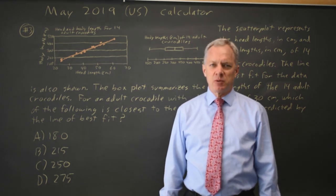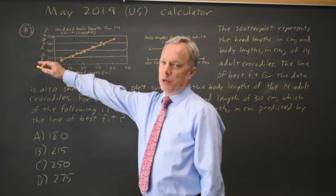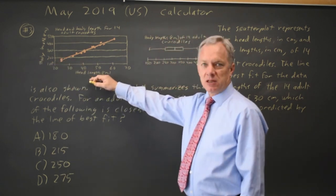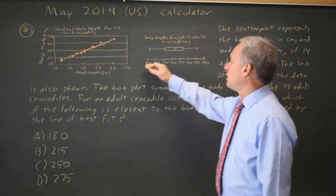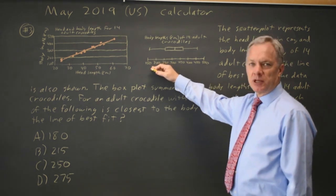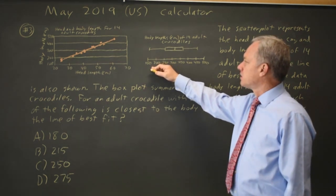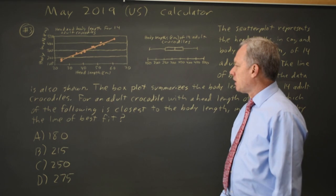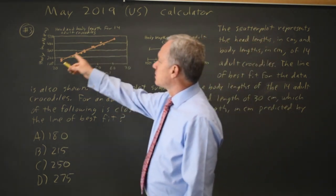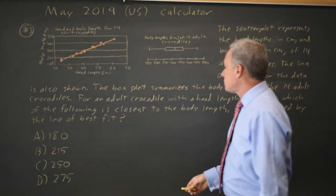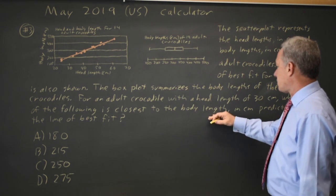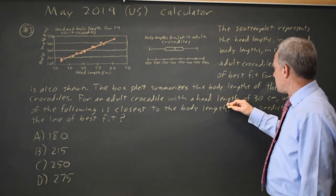This is calculator question number three. We have a scatter plot showing body length versus head length for adult crocodiles, and a box plot with just body lengths for the same adult crocodiles. The question is, given this line of best fit, what's the predicted body length for a crocodile with a head length of 30?